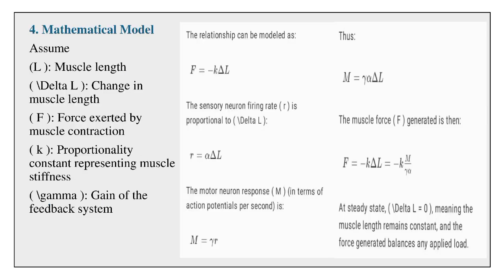Mathematical model: Assume L = muscle length, ΔL = change in muscle length, F = force exerted by muscle contraction, K = proportionality constant representing muscle stiffness, and γ (gamma) = gain of the feedback system.